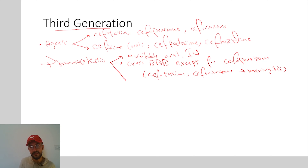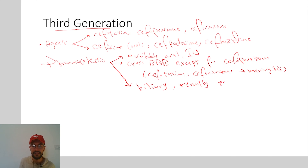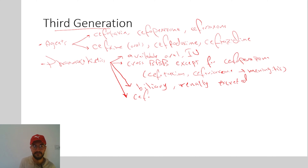The third generation is excreted both biliary and renally — through the bile and through the kidney. Cefoperazone is excreted by the biliary route only.